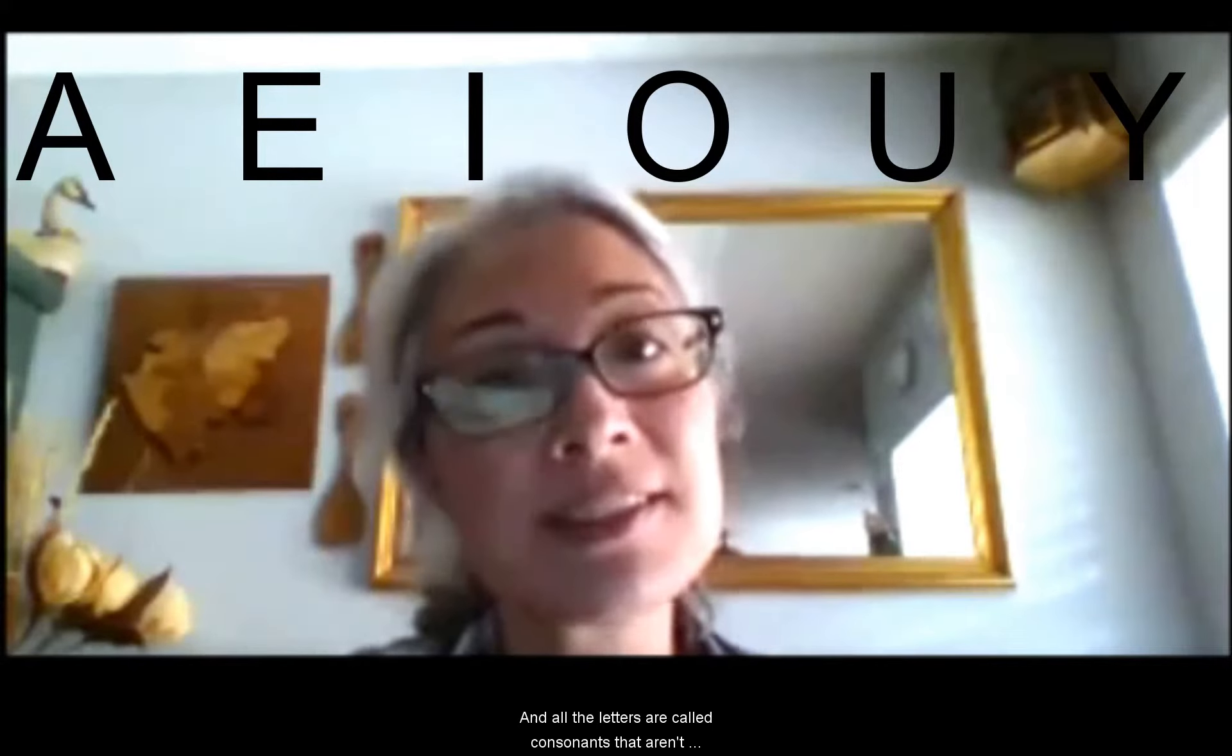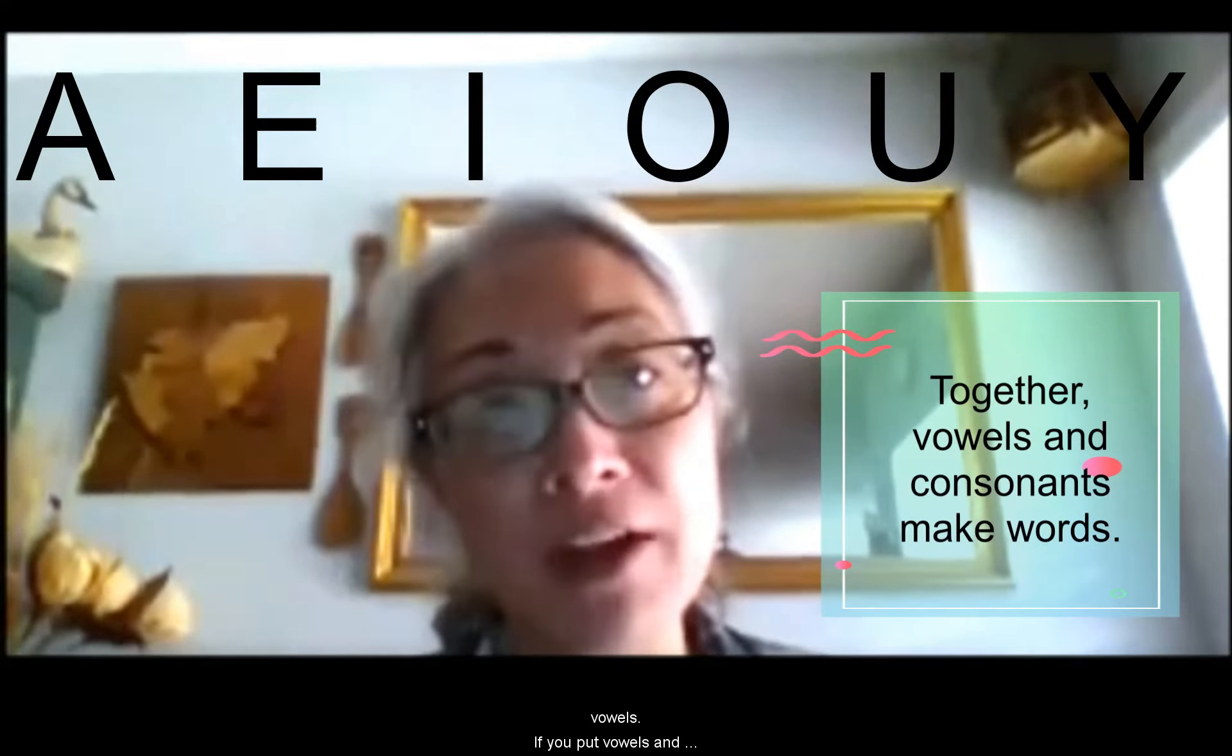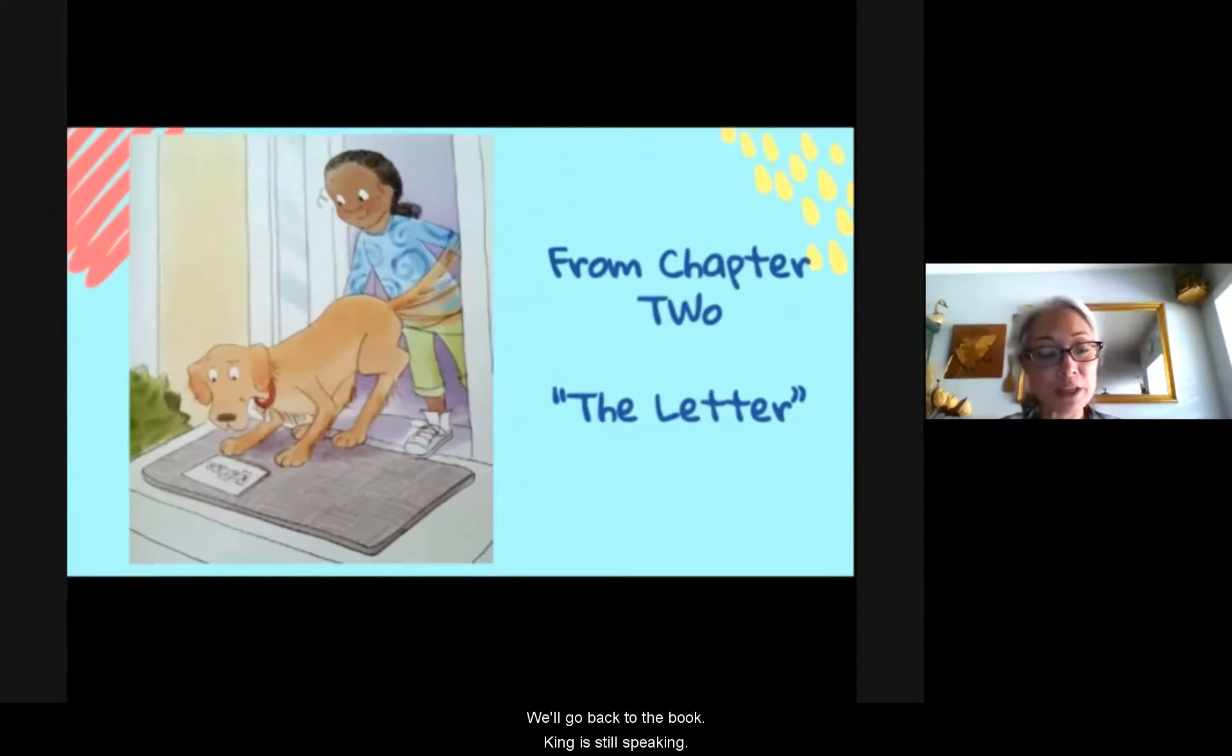A vowel is A, E, I, O, U, and sometimes Y. And all the letters are called consonants that aren't vowels. So if you put vowels and consonants together, you make words. And we'll go back to the book.